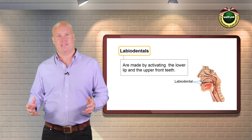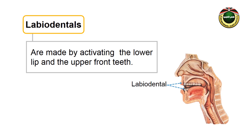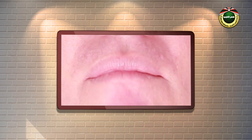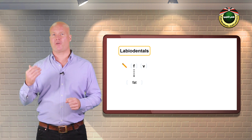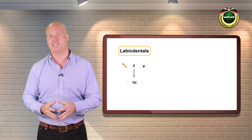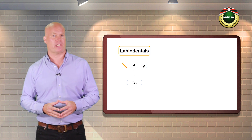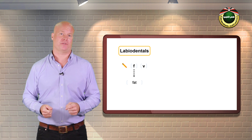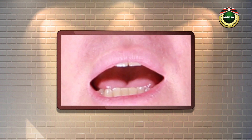Labio-dentals. Labio-dental sounds are made by activating the lower lip and the upper front teeth. Try to say the first sound in fat: f. Notice how your lower lip is raised until it touches your upper front teeth. Look at the diagram which displays the place of articulation for the labio-dental f sound. English labio-dentals are f and v.